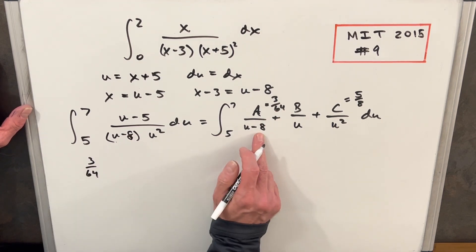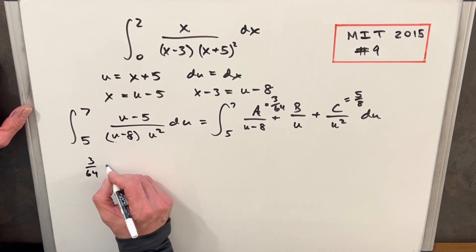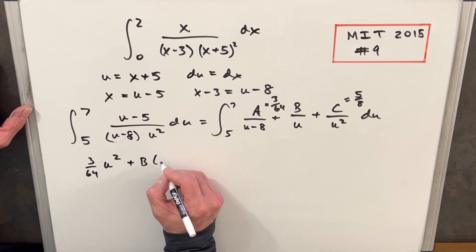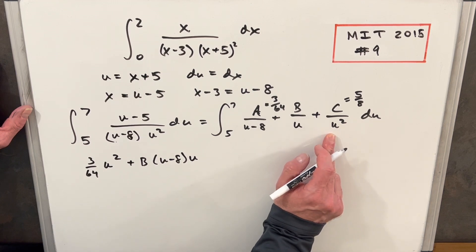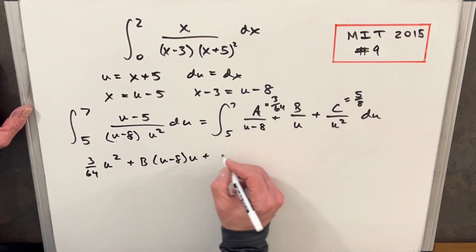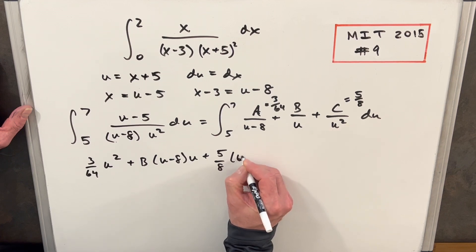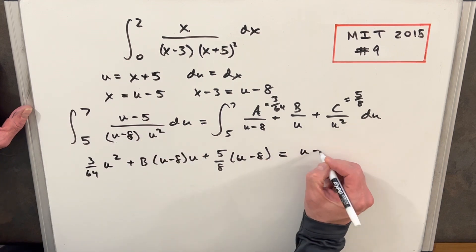So we're going to have, for our A, three over 64. To get back to this, we need to multiply by u squared. So we'll just say, or 64 times u squared. Then we'll have our B term. To get the common denominator, we're going to have to have a u minus eight times a single u. We already have one u. And then here, to get a common denominator, we have our C value, five eighths. We're going to multiply by u minus eight. And this whole thing needs to be equal to u minus five.